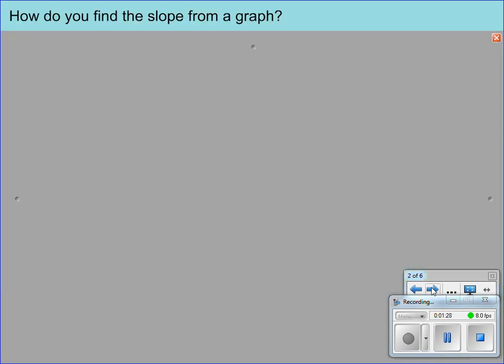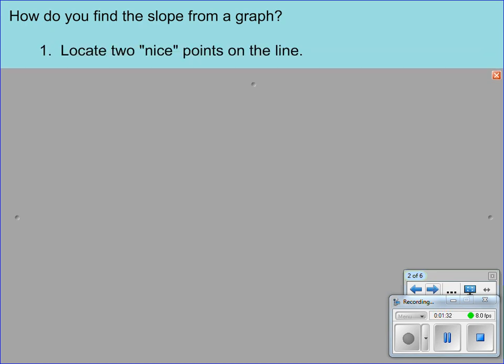So, how do we find slope from a graph? We've got three steps that you need to take into consideration. The first thing you want to do is locate two nice points on the line. Now, nice points means the points are very obvious. They would be located right on the grid marks. You don't want to pick points that are kind of in the spaces because then you can't really be sure if it's at a half or a third or a fourth. So, you want to make sure that they're actually on the corners of the boxes.